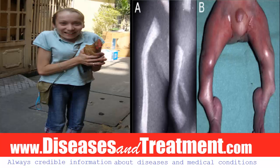Only a few people with Campomelic Dysplasia survive past infancy. As these individuals age, they may develop an abnormal curvature of the spine and other spinal abnormalities that compress the spinal cord. People with this condition may also have short stature and hearing loss.